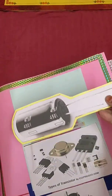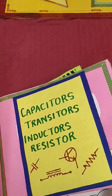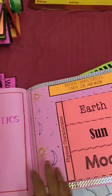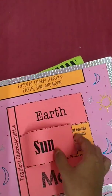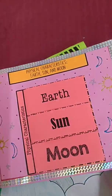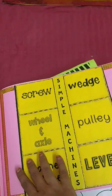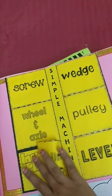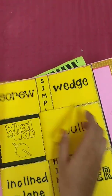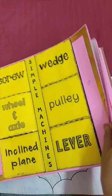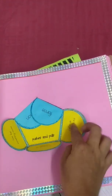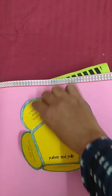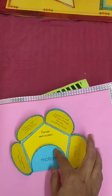The album continues with capacitors, transistors, and resistors, then the physical characteristics of the sun, earth, and moon, and simple machines. There's also a section on speed, motion, and all the physics terms — the definitions are arranged like a flower, and when you open it, it unfolds into a flower shape.